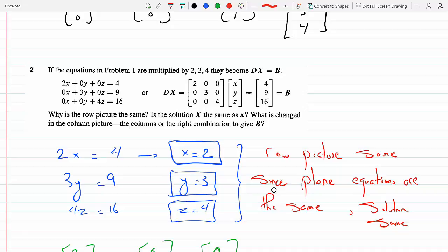That's the question, and the answer is yes, we do get the right combination to give B.